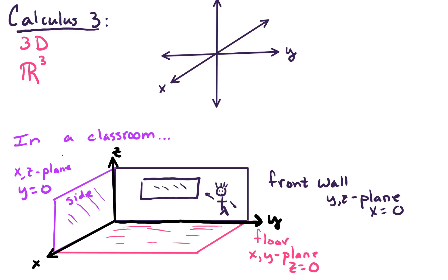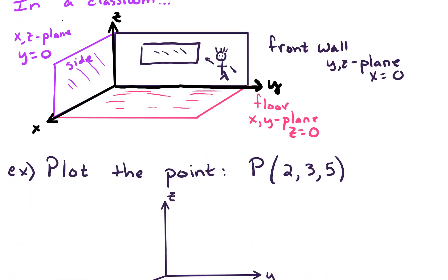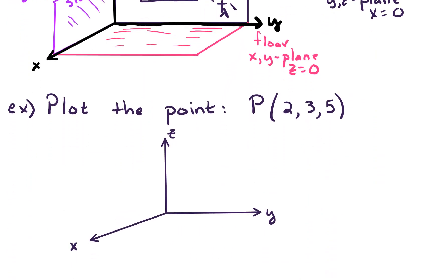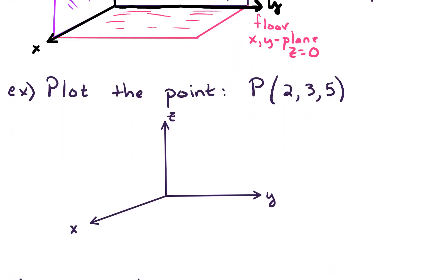I think that's a good visualization to keep in mind. For practice, let's look at plotting the point given by (2, 3, 5) in 3D. The first component is x, the second component is y, and the third component is z. We need to move out two units in the x direction, move over three units in the y direction, and then up 1, 2, 3, 4, 5 in the z. It's kind of hard to draw that point hanging out in space.